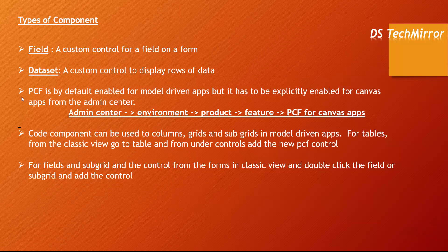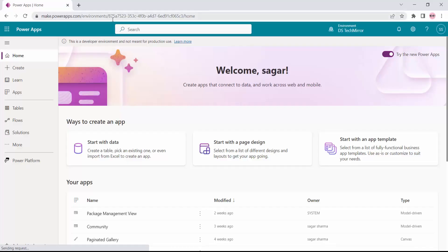PCF is by default enabled for Model-Driven Apps, so you can straight away start development and deploy. But if you are planning to create a PCF component for Canvas App, you have to enable that explicitly from the Admin Center. The steps are: go to your Admin Center, select your environment, go to Product Features, and enable PCF for Canvas App. Let me quickly show you how to enable it.